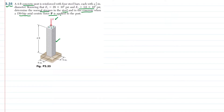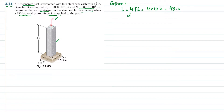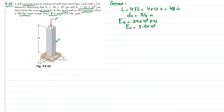Given data: the length of the concrete post is 4 feet, and 4 feet in inches is equal to 4 × 12 = 48 inches. The diameter of the steel bar is equal to 3/4 inch. The modulus of elasticity of steel, E_s, is 29 × 10⁶ psi, and the modulus of elasticity of concrete is 3.6 × 10⁶ psi. The centric load P is 150 kips.